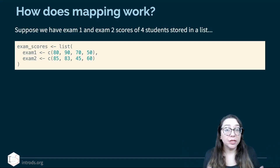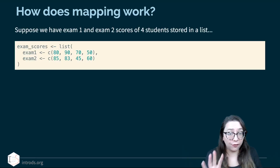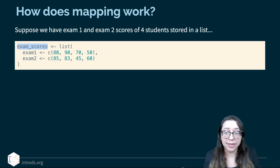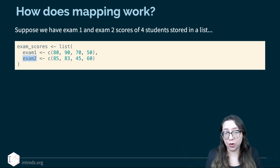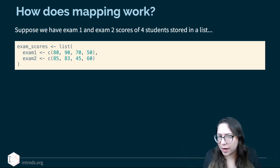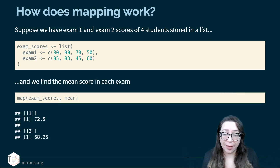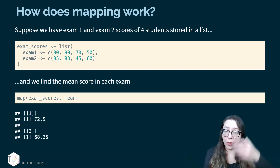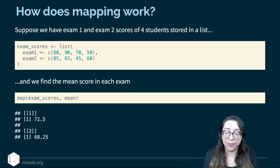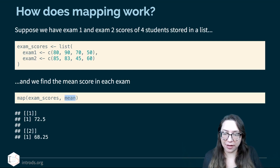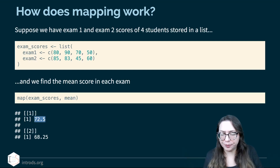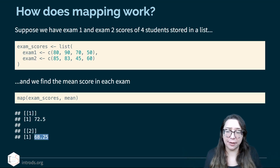So how does mapping work? Suppose we have exam one and exam two scores of four students stored in a list called exam_scores, with two elements — exam one and exam two — each with four scores. To find the mean score in each exam, I say map: the first argument is what we want to map over, which is exam_scores, and the second argument is the function, mean. The result gives 72.5 for the first exam and 68.25 for the other.